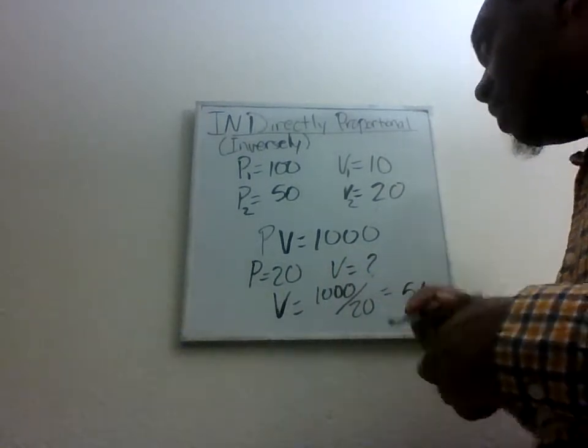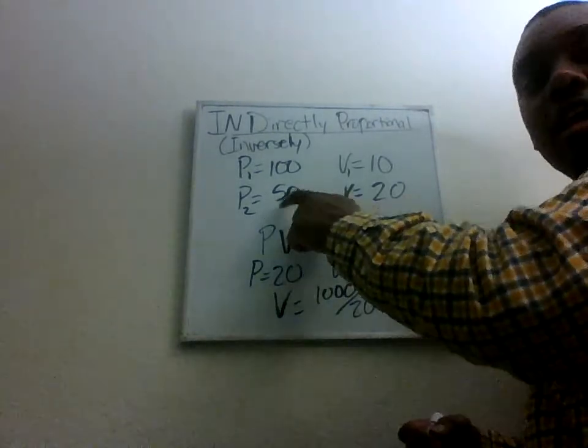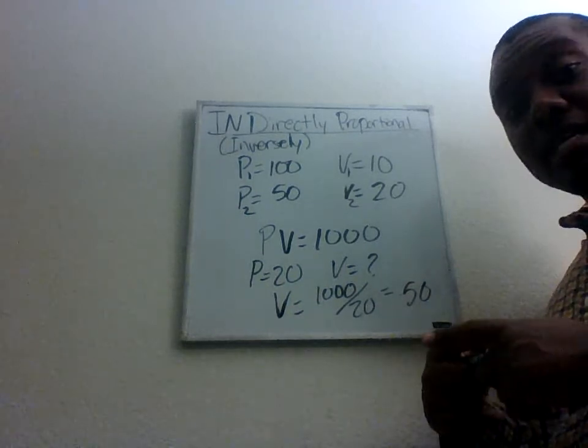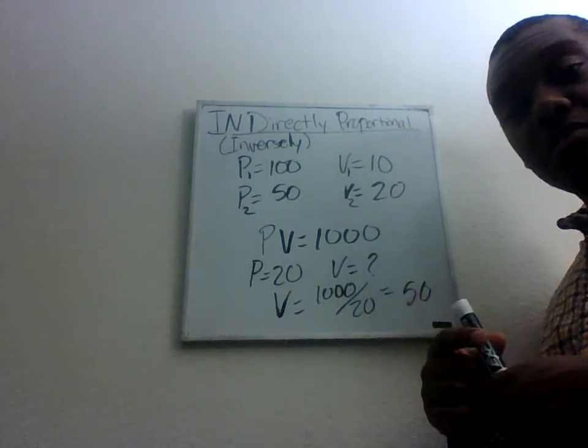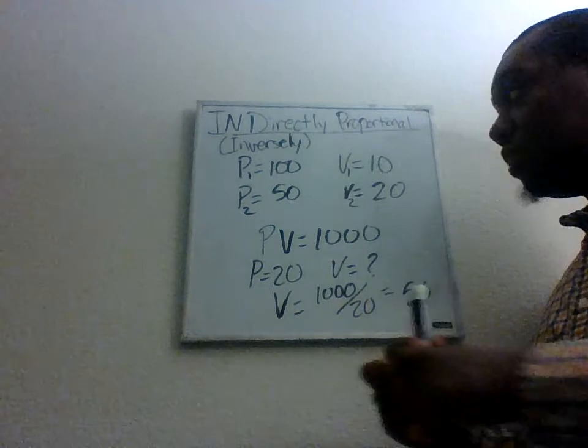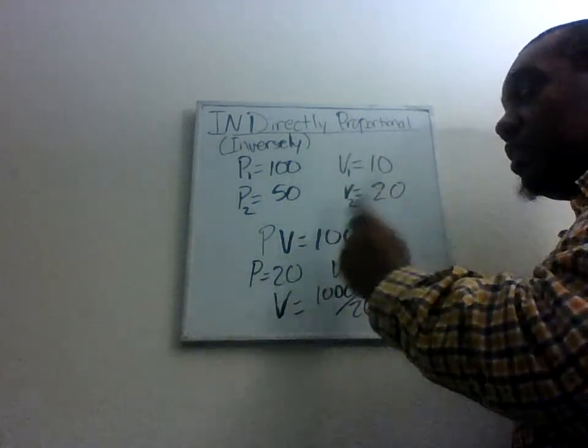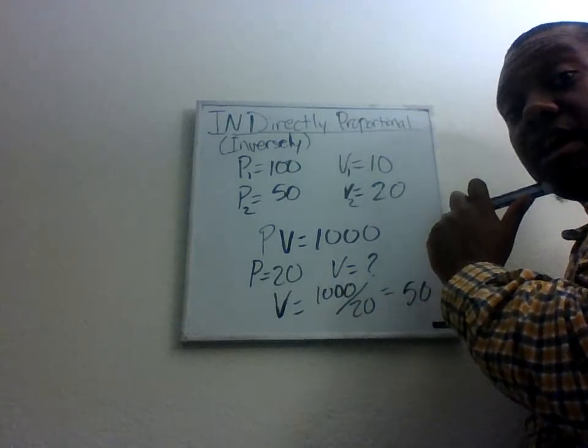Then we can get 50. Oh, isn't that what we got over here? Just another way to check to make sure it's working. And that is inversely or indirectly proportional. So if you see that as you increase, as you increase 1, the other decreases by the similar factor or the same factor.